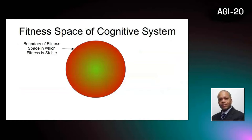Since its functions don't spontaneously appear or disappear, the cognitive system is observed to have stability in its fitness to execute its functions. Representing this fitness to execute cognitive functions as a position in fitness space, the cognitive system must be confined to a bounded region in this fitness space as it moves through the open and unbounded conceptual space.